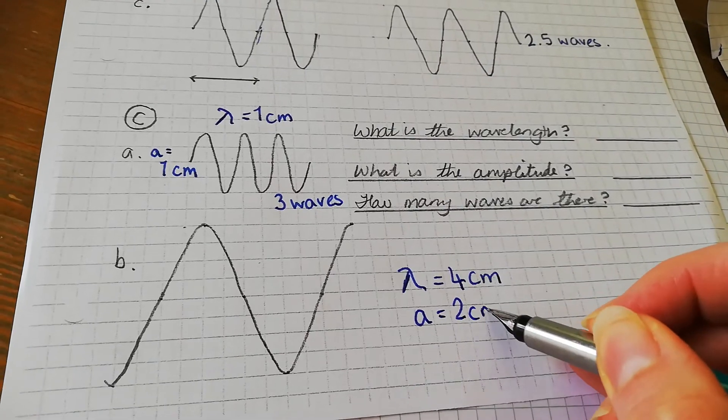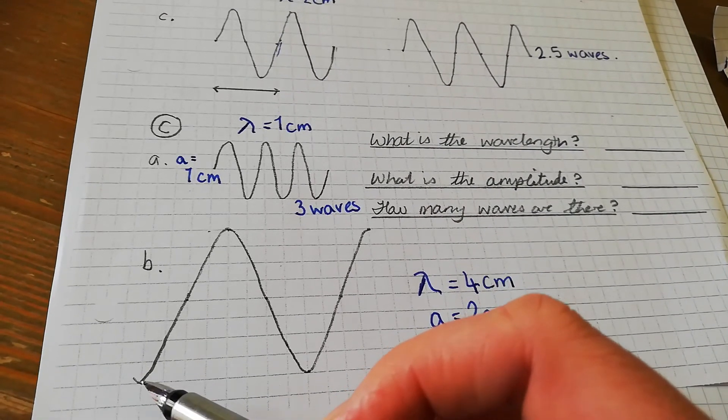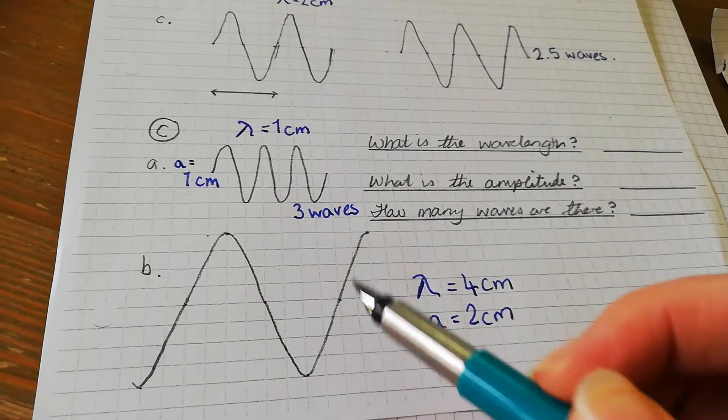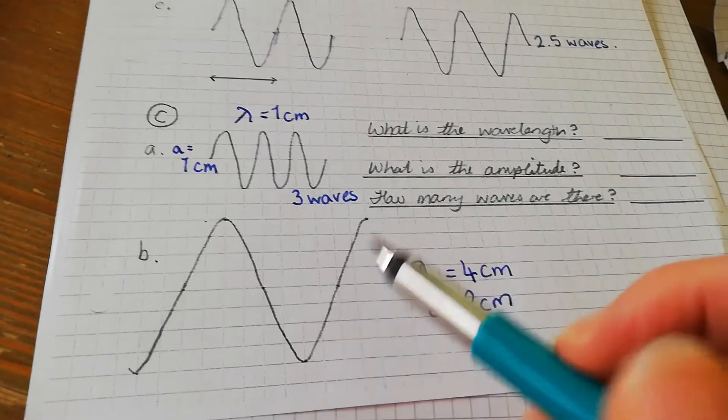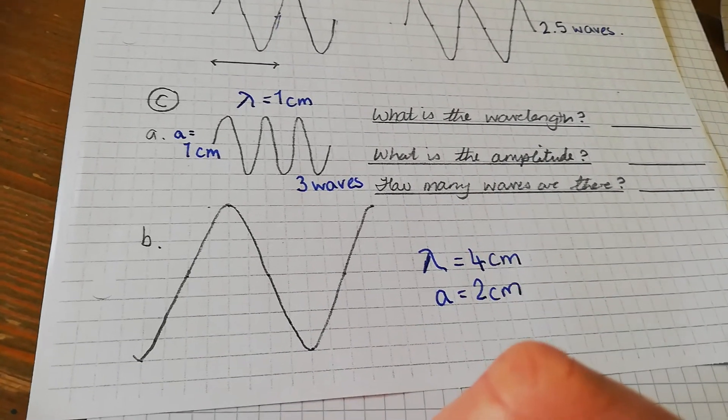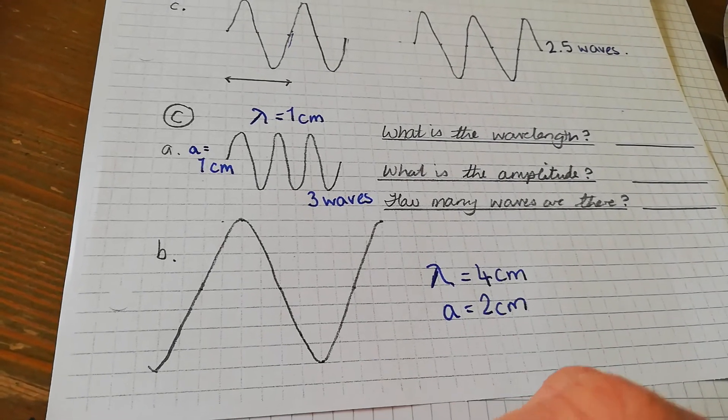How many waves are there? Well, it's difficult to know where to start because it finishes on a crest but it starts on a trough. That is a hint that it's not a full whole number of waves.